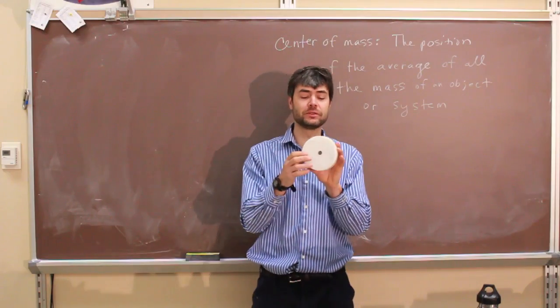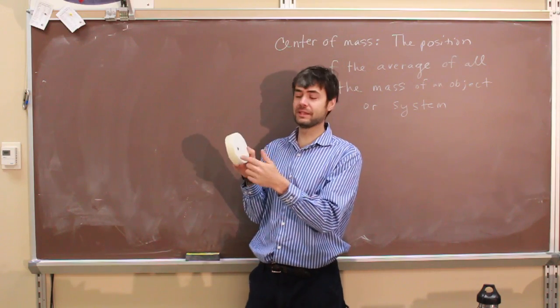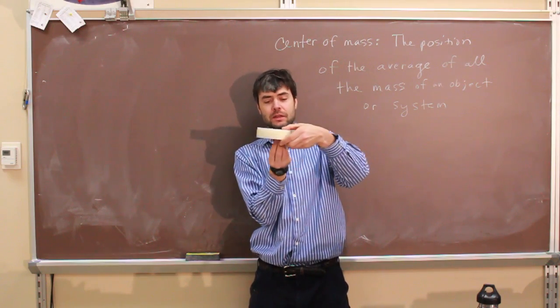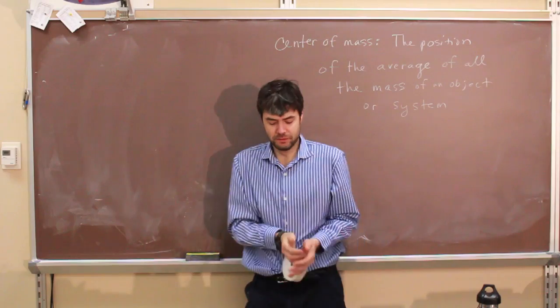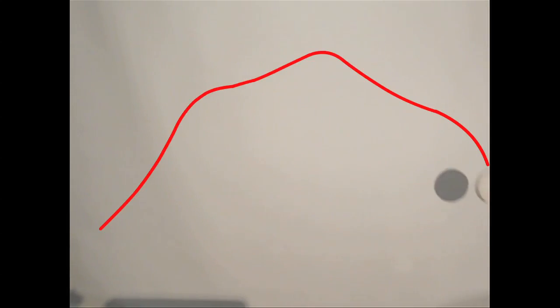The same thing with this object right here. This is the center of the object, but the center of mass is offset because there's a weight inside. I can actually balance it right there on that point. We see the center of the object indicated by the black dot following a non-parabolic path, but when we look at the dot at the center of mass, we can see that it actually does follow a parabola.